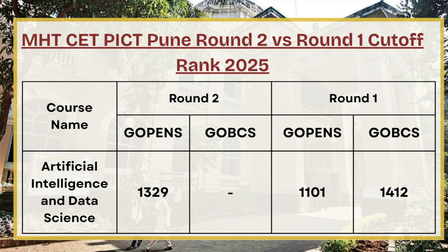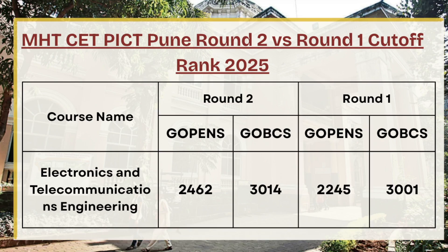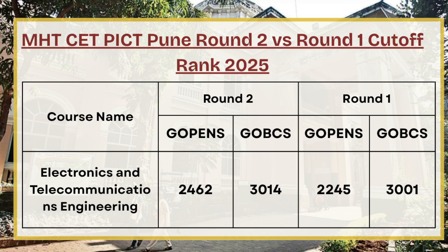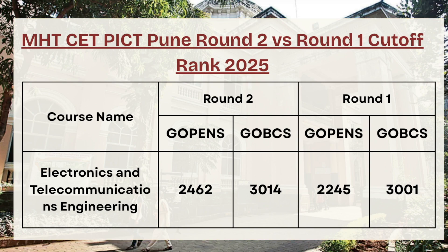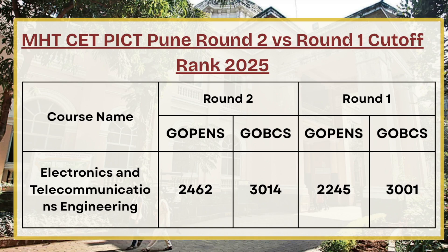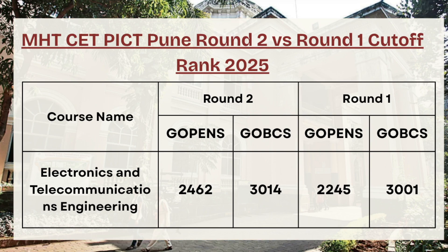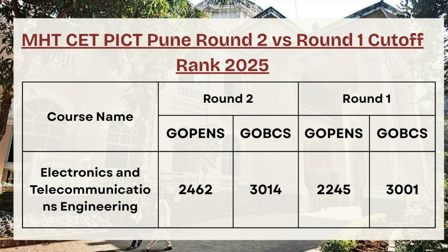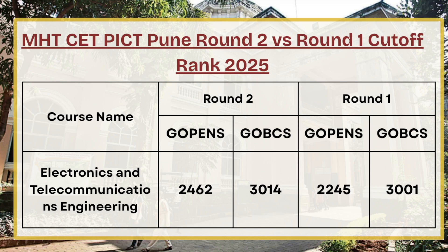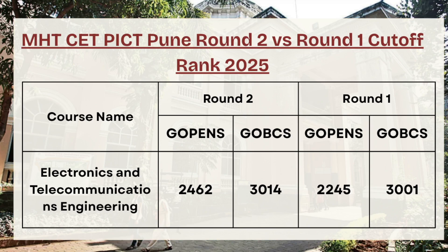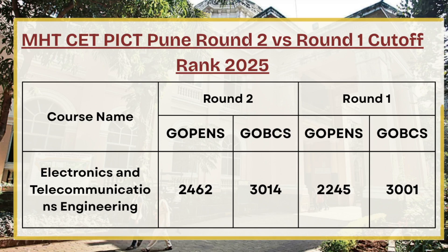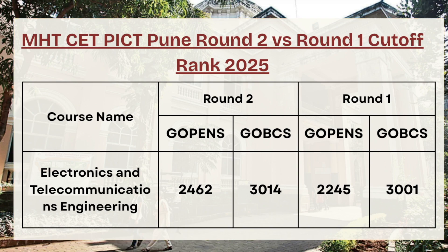For G OBC category in AI, the Round 1 cutoff rank was 1412. Next, for Electronics and Telecommunication Engineering, the G Open Round 2 cutoff rank was 2462 and Round 1 was 2245, a gap of 217 points. The Round 3 cutoff can be expected between 2500 to 2800. For G OBC, Round 2 was 3014 and Round 1 was 3001 — a very slight difference — so Round 3 cutoff can range between 3000 to 3300.